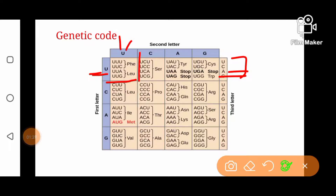Is tarah hum saray cells mein yeh 64 combinations bana saktay hain. Ab yeh 64 combinations mein 61 codons hain — inko sense codons kehte hain ya coding codons kehte hain, yaani yeh woh codons hain jo amino acids ke liye code kertay hain. Aap is table mein dekh saktay hain ke amino acids ke abbreviations yahan likhe hue hain — jaise phenylalanine, leucine, serine — aur yeh nucleotides serine ke liye code kertay hain, yeh leucine ke liye. To 61 codons out of 64 are sense codons or coding codons jo amino acids ke liye code kartay hain.